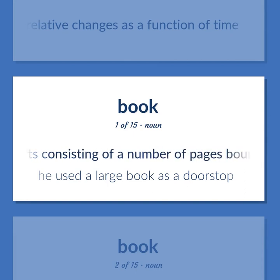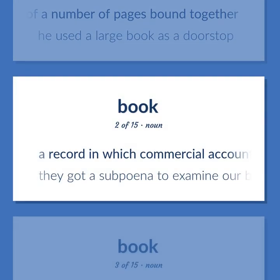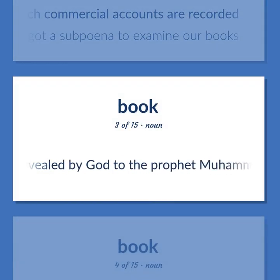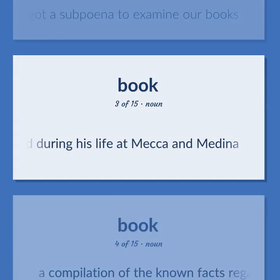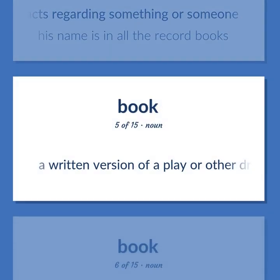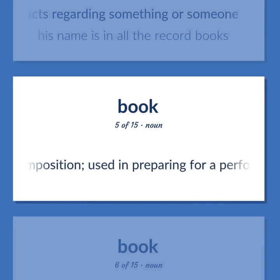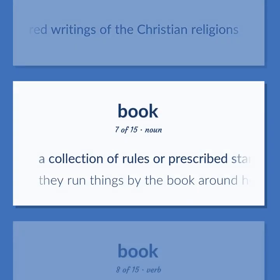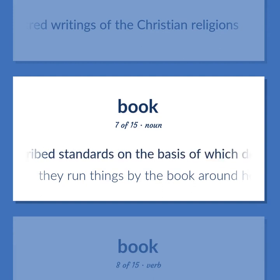Book: Physical objects consisting of a number of pages bound together — he used a large book as a doorstop. A record in which commercial accounts are recorded — they got a subpoena to examine our books. The sacred writings of Islam revealed by God to the prophet Muhammad during his life at Mecca and Medina. A compilation of the known facts regarding something or someone — his name is in all the record books. A written version of a play or other dramatic composition used in preparing for a performance. The sacred writings of the Christian religions. A collection of rules or prescribed standards on the basis of which decisions are made — they run things by the book around here.